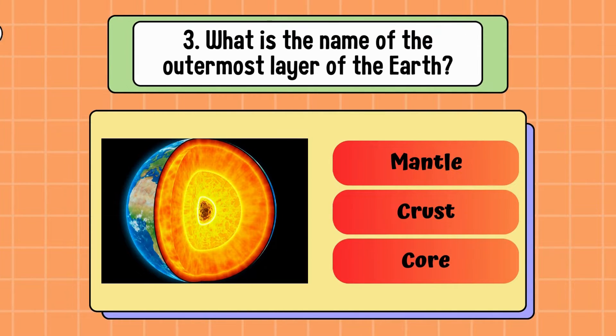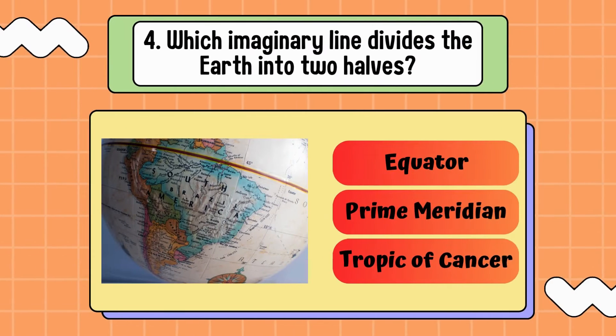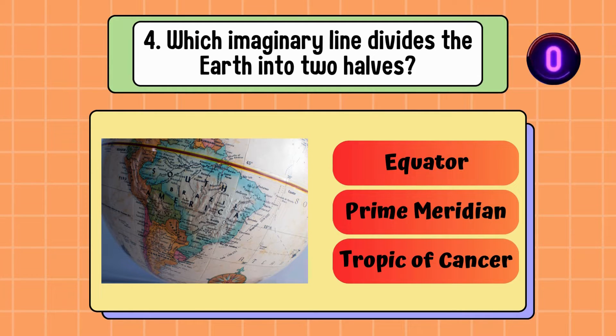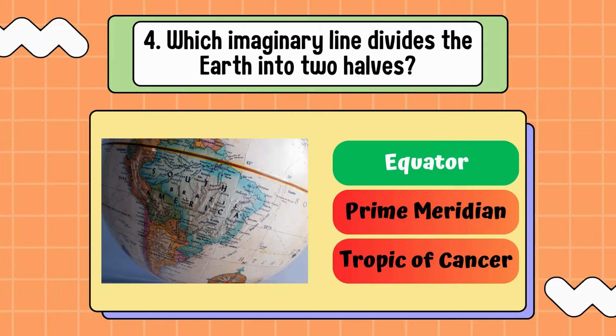What is the name of the outermost layer of the Earth? Mantle, crust, or core? Answer is crust. Which imaginary line divides the Earth into two halves? Equator, prime meridian, or Tropic of Cancer? The correct option is equator.